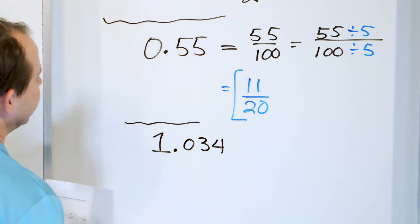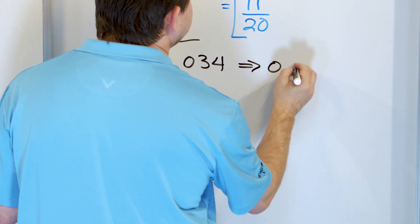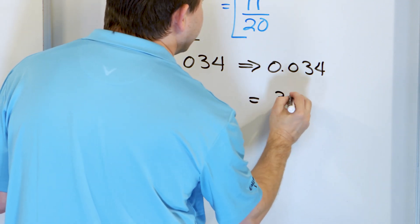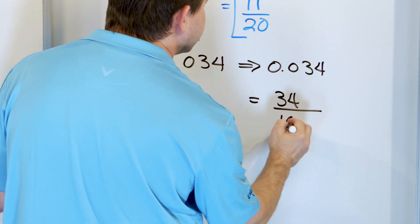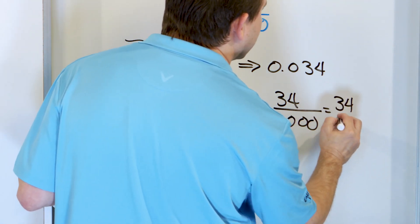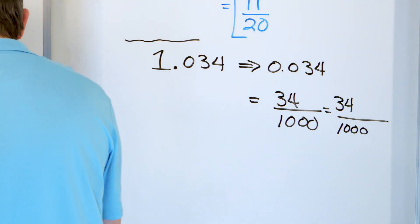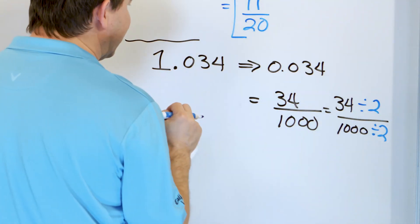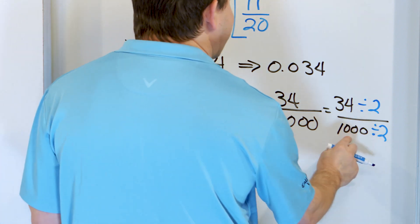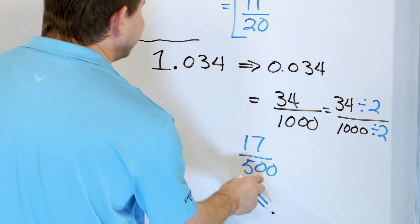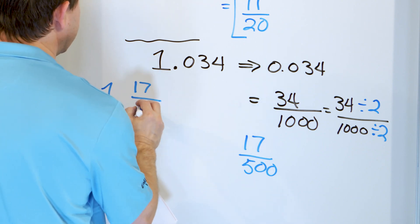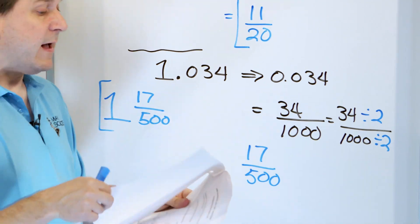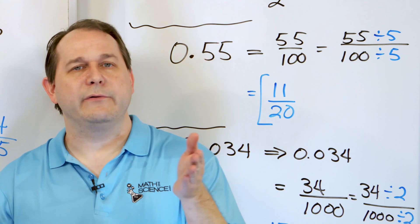Last problem: 1.034. Let's take the fractional part, 0.034. It's 34 in the farthest position, which is thousandths. Can I simplify 34 over 1,000? We divide top and bottom by 2 because they're both even. 34 divided by 2 is 17, and 1,000 divided by 2 is 500. Attaching this to the 1 gives us 1 and 17 five-hundredths. That's the answer.